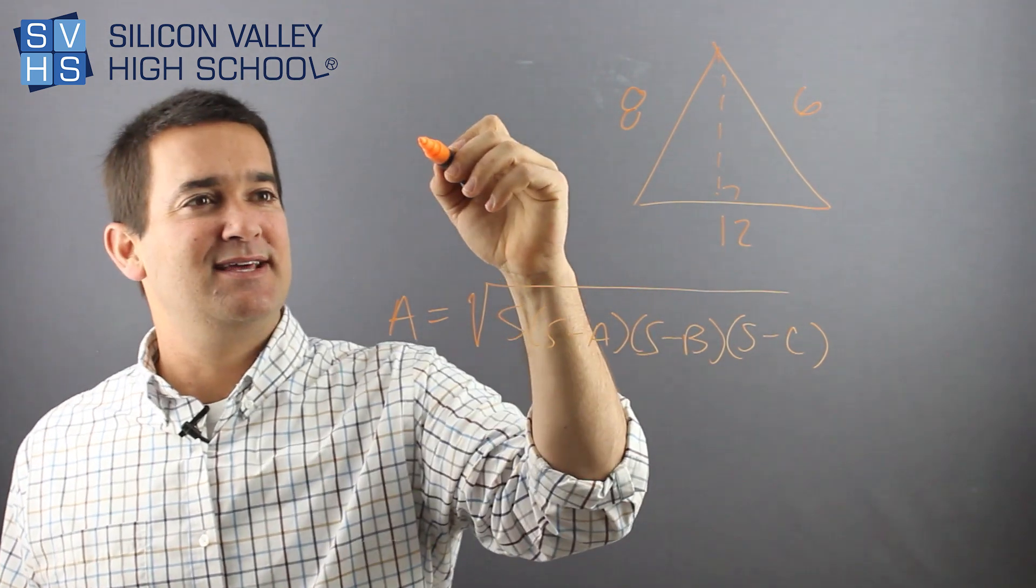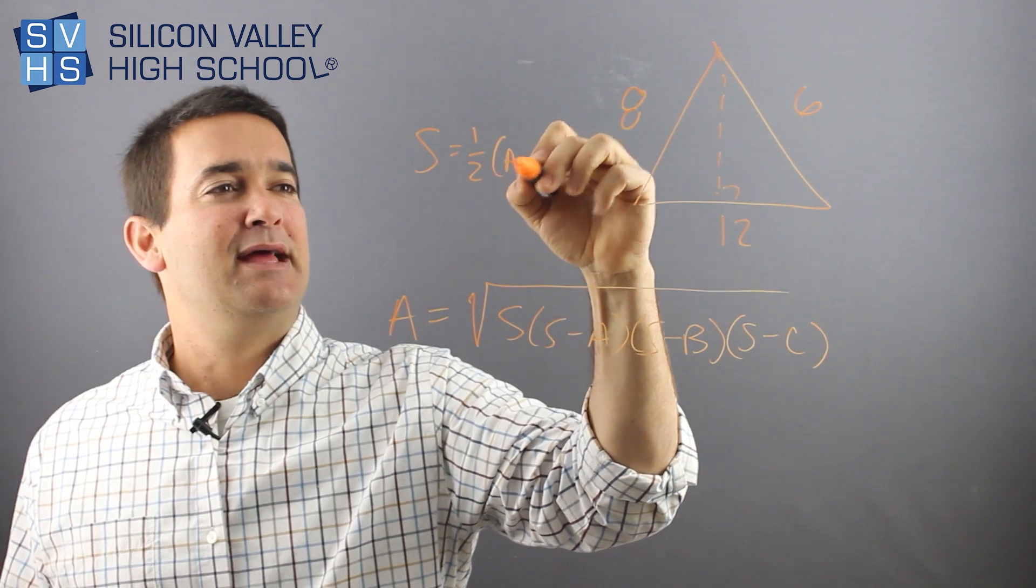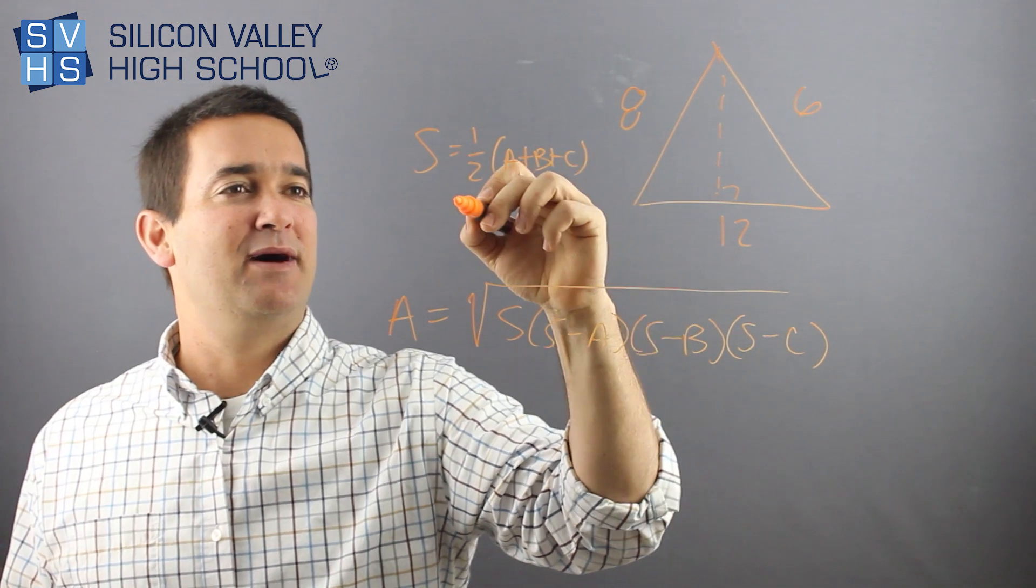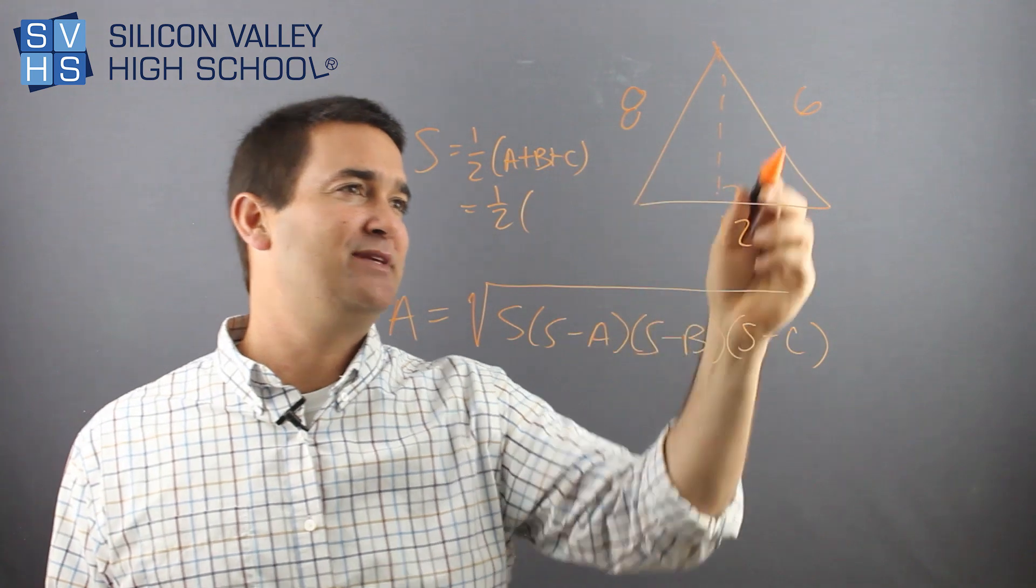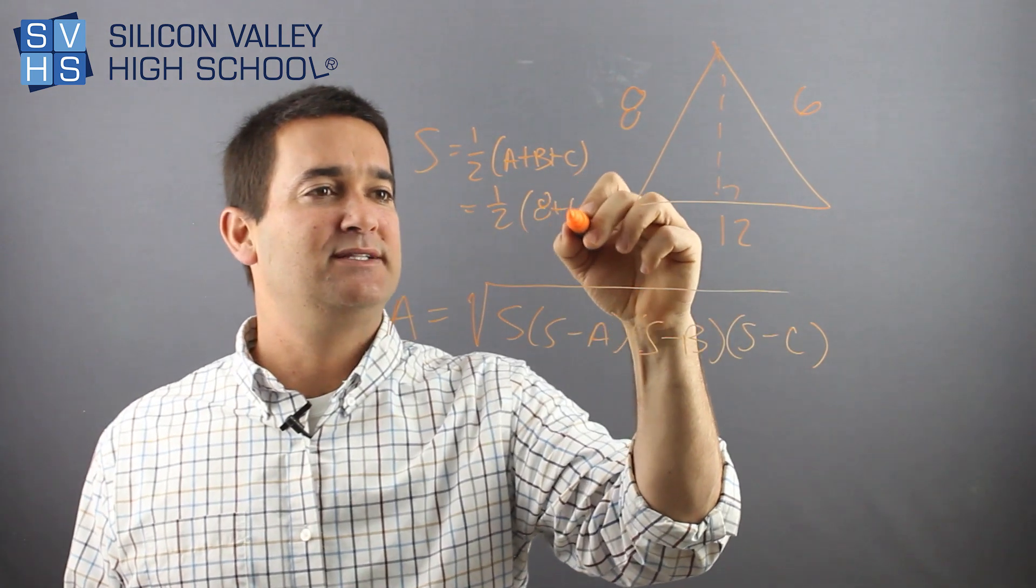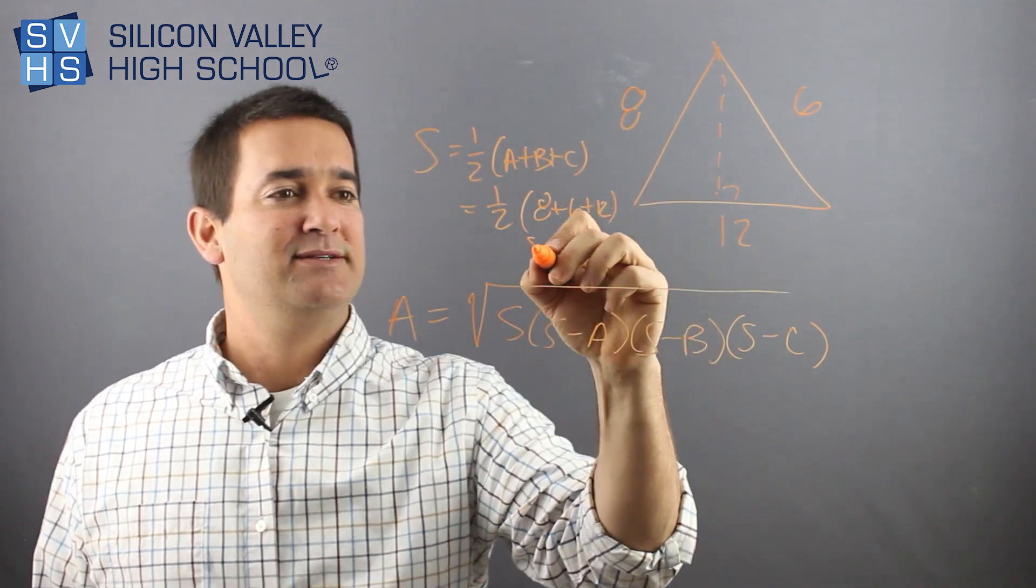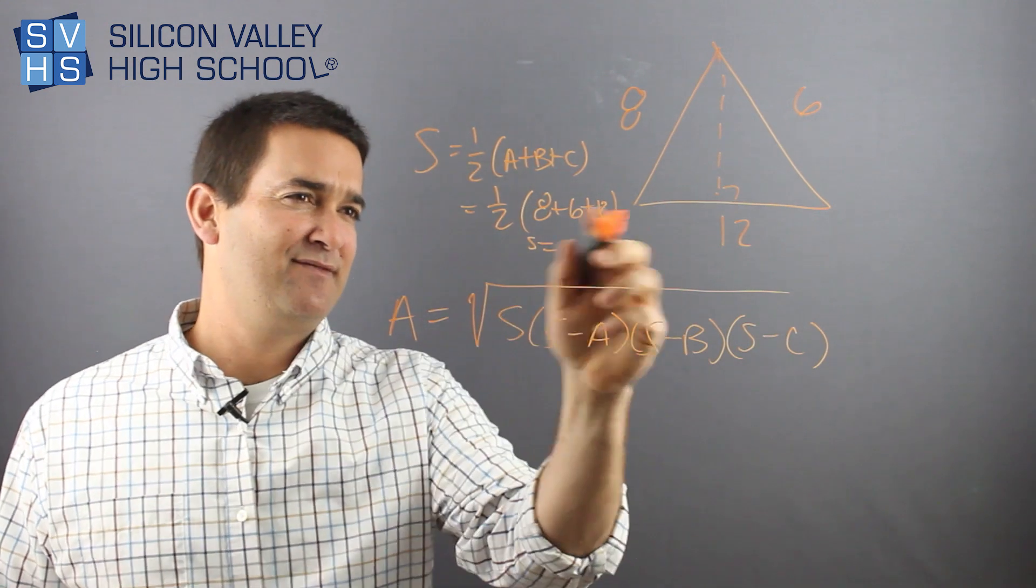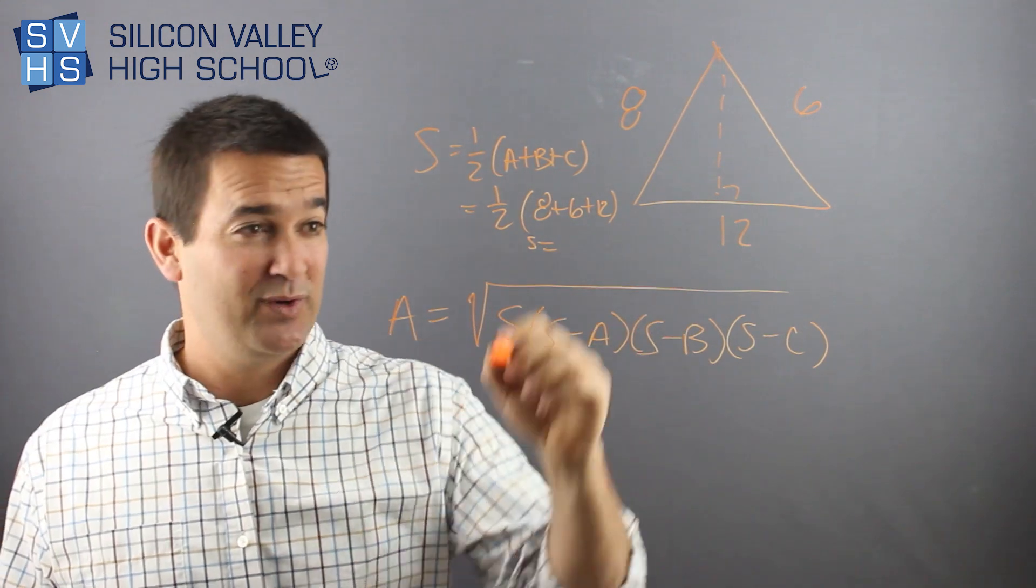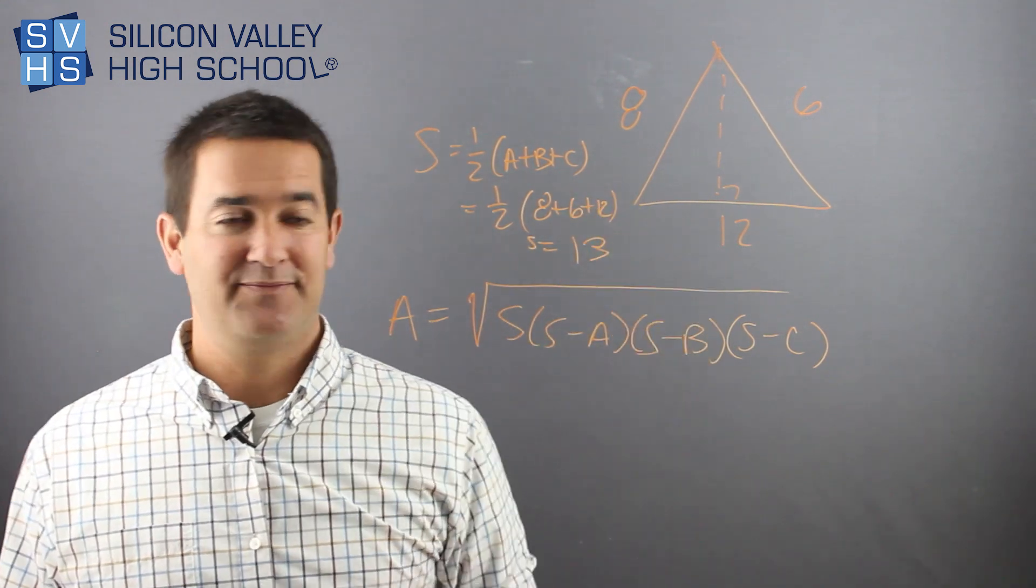So S is this. S equals 1/2(A+B+C). So in my case, it's 1/2. Let's add up these sides. This would be 8+6+12, right? So doing a little bit of math, it looks like 14, looks like 26. Half of 26, S is 13. Cool?